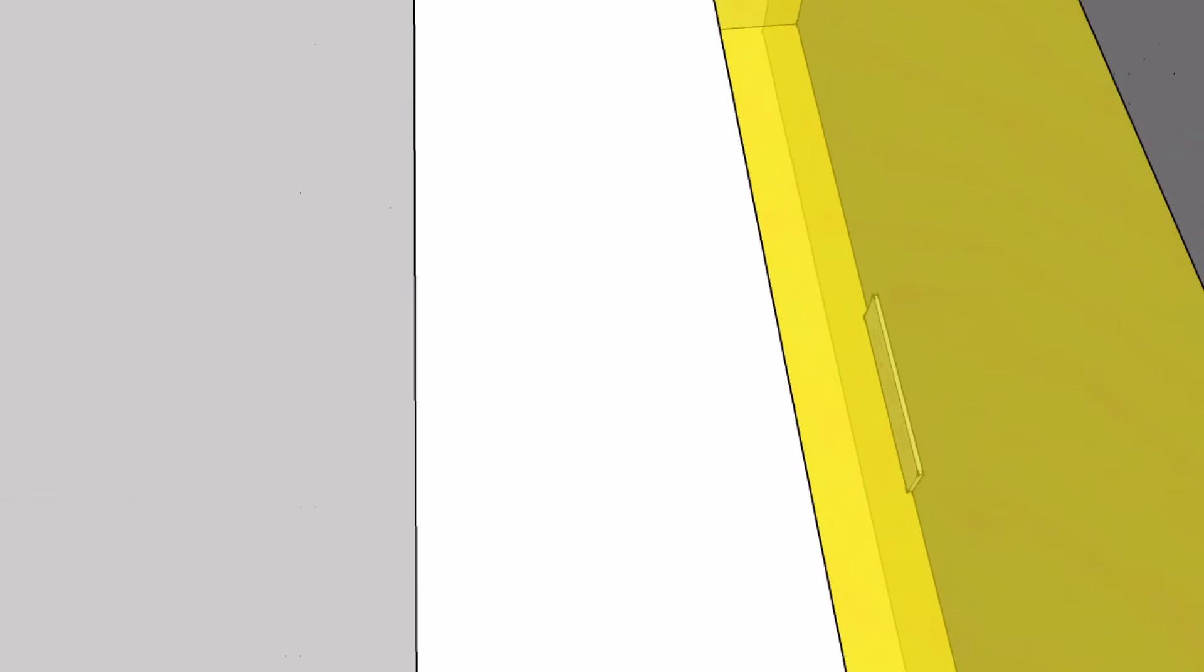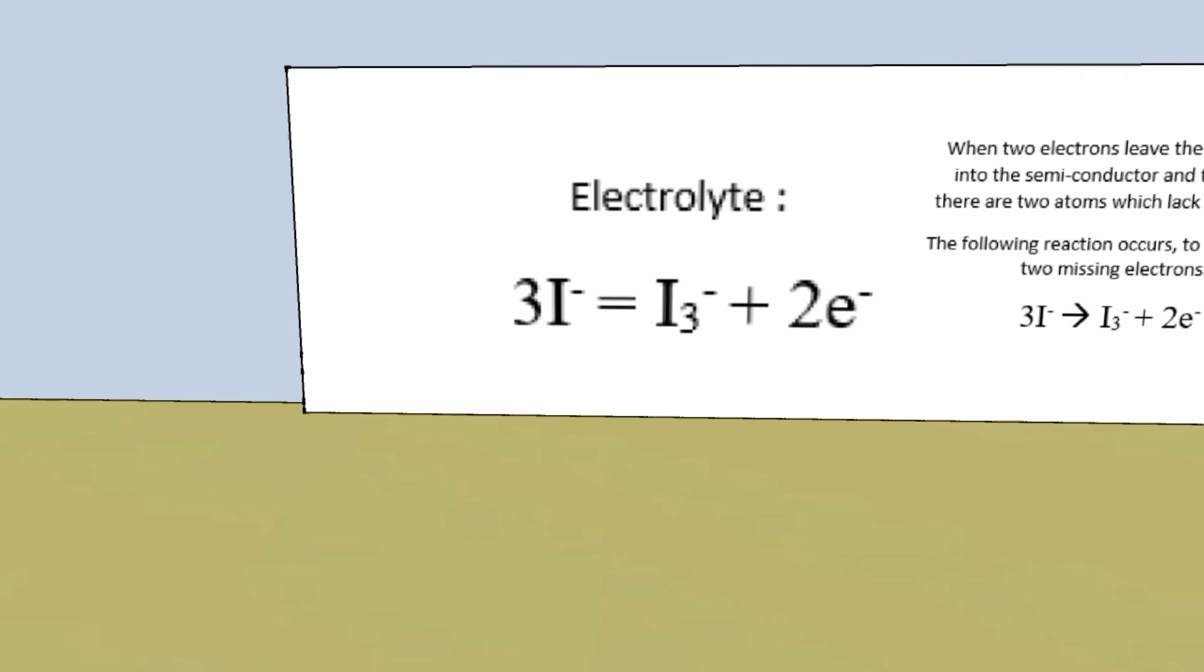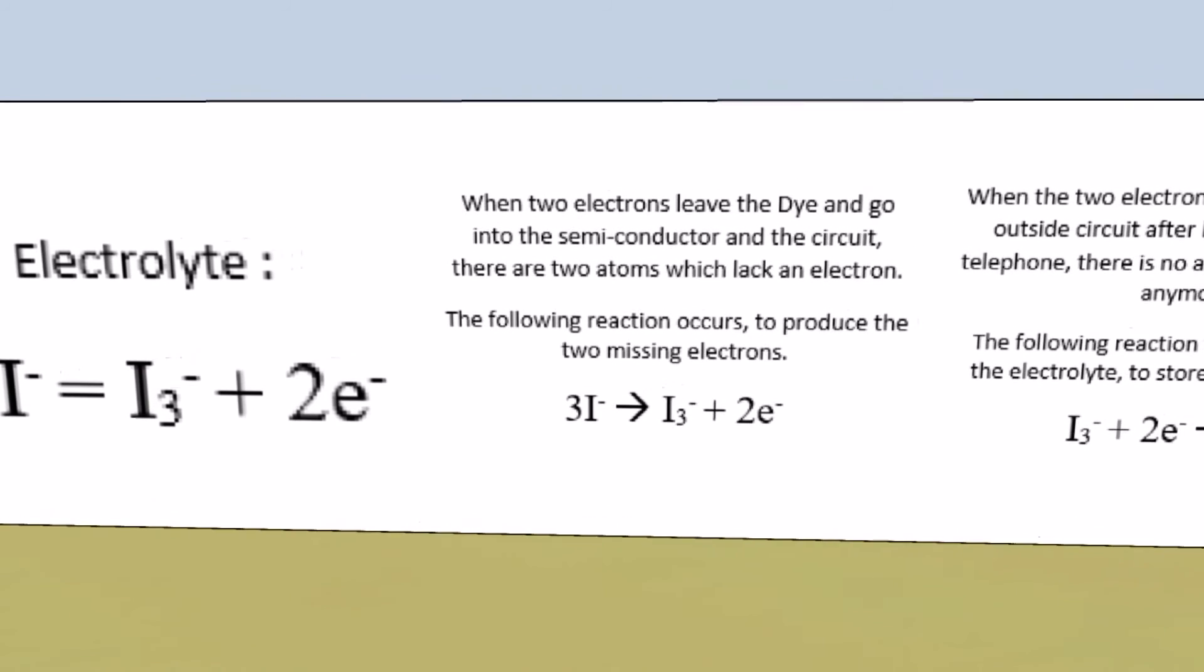They are now integrated into the electrolyte which is the path between the anode and the cathode. This electrolyte is composed of a redox couple, I minus, I three minus.